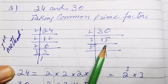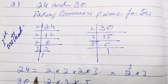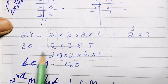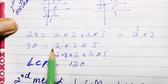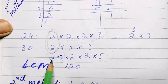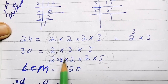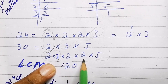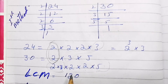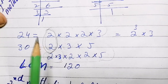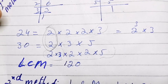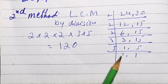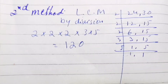For 24 and 30, we write out the prime factors, identify common factors — 2 and 3 are common — then multiply all common and non-common factors together. When finding LCM, you must include all common factors and all remaining non-common factors. The second method gives the same answer.